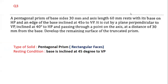Hi, I'm Mohan. In this video I'm going to explain the development of lateral surface of solids. This question is chosen from a video model question paper. The problem is: a pentagonal prism of base side 30mm and axis length 60mm rests with its base on HP, and an edge of the base inclined at 45 degrees to VP. It is cut by a plane perpendicular to VP, inclined at 40 degrees to HP, and passing through a point on the axis at a distance of 30mm from the base.